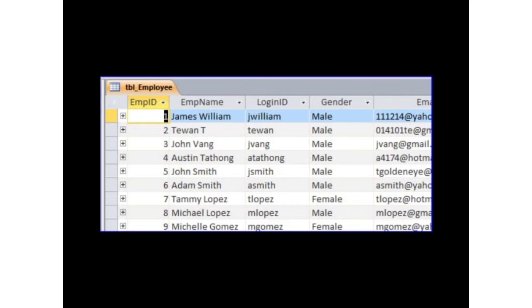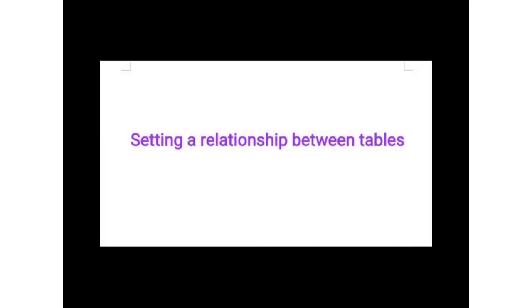Forms and reports are used for presenting data in a more user-friendly format. Our first topic is setting a relationship between tables. You can use MS Access to store data in many tables. The data in one table can be linked to that in another table with the help of fields common to both. The common fields are used to set up a relationship between the tables.